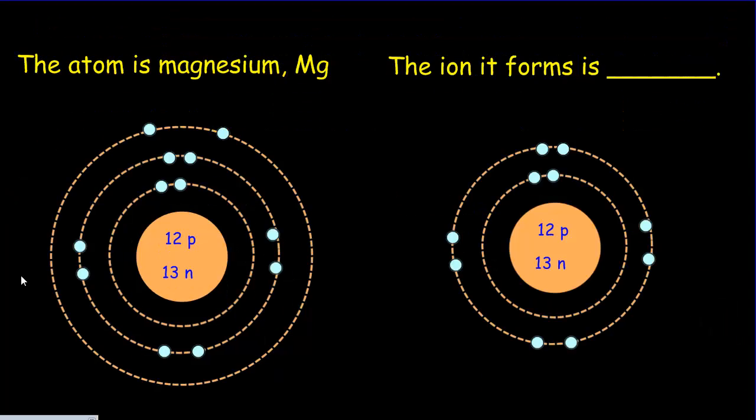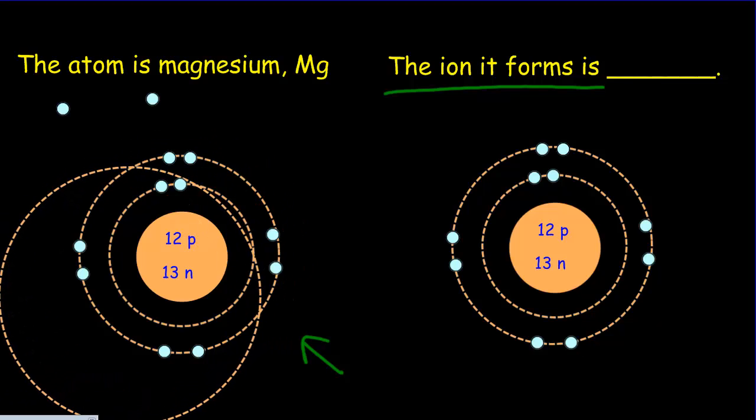This atom right here is magnesium, Mg, and that's the neutral atom magnesium. It has 12 protons and it has 12 electrons. The ion that it forms is when two electrons are lost, so we lose two electrons and this orbit would disappear because there's no electrons in it, and we'd be left with this ion.